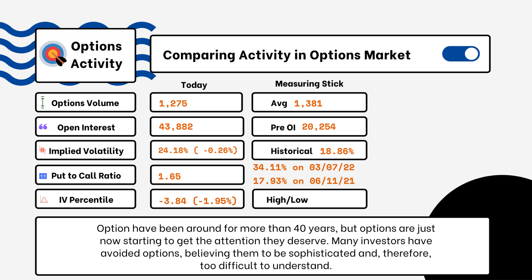When looking at put-to-call ratios, if we see anything above one, that is telling us there is more bearish sentiment in the market rather than bullish. If we see something more like 0.5 or 0.7, that tells us it's more bullish than bearish, indicating there are more calls being purchased rather than puts.